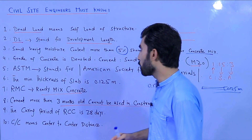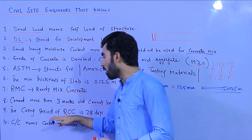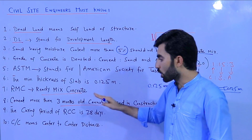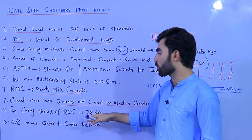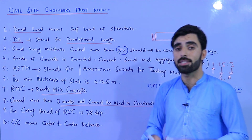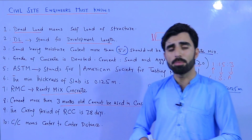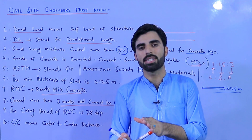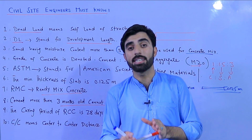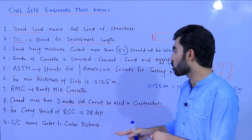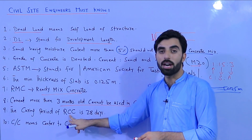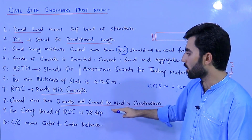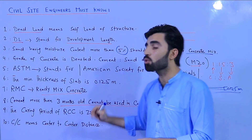The ninth point: the curing period of RCC — Reinforced Cement Concrete — is 28 days. After 28 days of curing, you can obtain approximately 99% of the full strength of the RCC. Therefore, the standard curing period for RCC is 28 days.